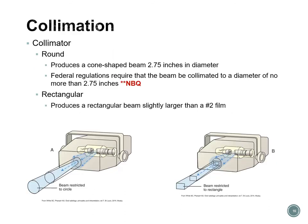Both a round collimator and a rectangular collimator are visible here, and you can see the difference in the beam shape each produces. The collimator is located between the tube and the PID. The circular or round collimator produces a cone-shaped beam 2.75 inches in diameter—federal regulations require that the beam be collimated to a diameter of no more than 2.75 inches. The rectangular collimator produces a beam slightly larger than a number 2 size film.